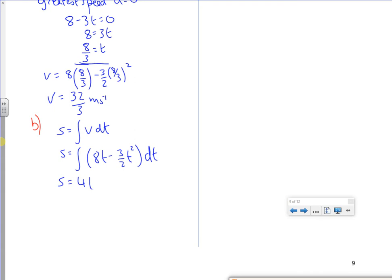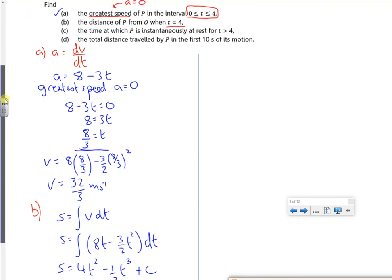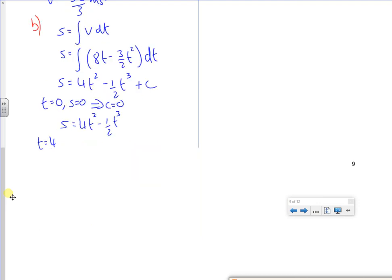So s is going to be 4t squared minus a half t cubed plus c. I know that when t is zero, s is zero. Because I haven't got any exponentials or sines or cosines, it'll mean that c is zero. You can see that though. So s is 4t squared minus a half t cubed. Now I want it for t is 4. So when t is 4, s is 4 lots of 4 squared minus a half 4 cubed. That gives 32 meters. That's part B.